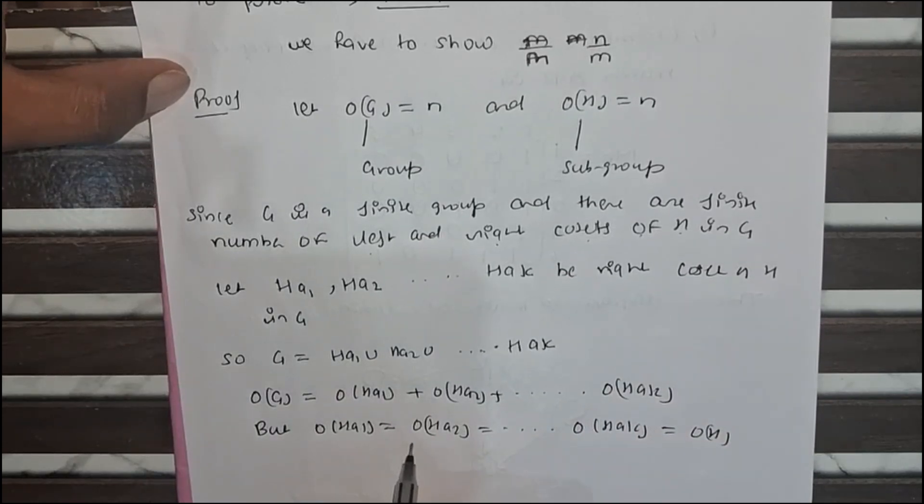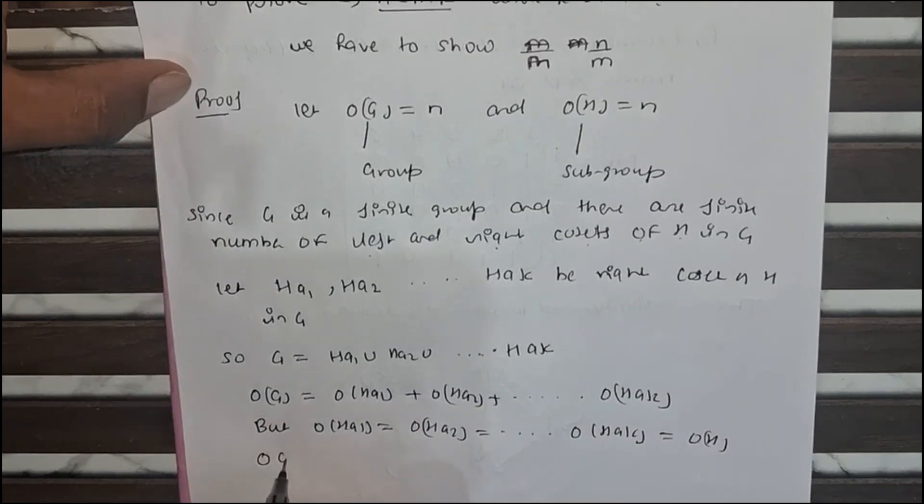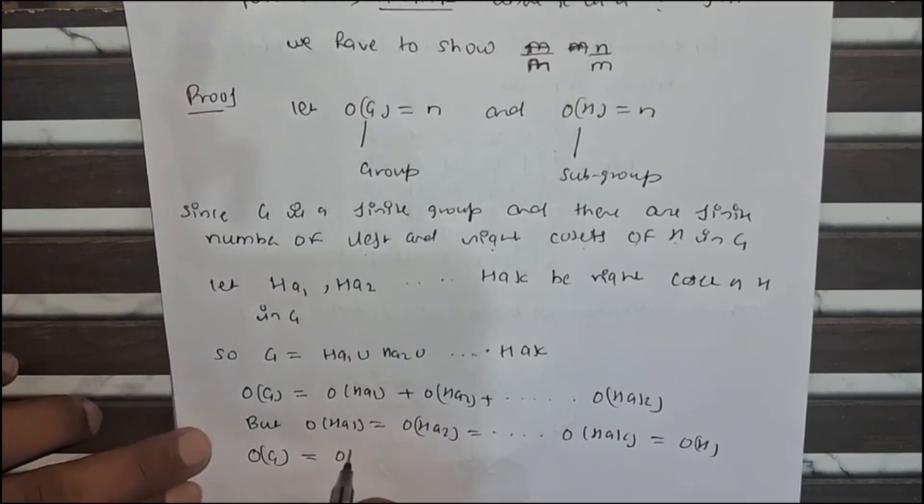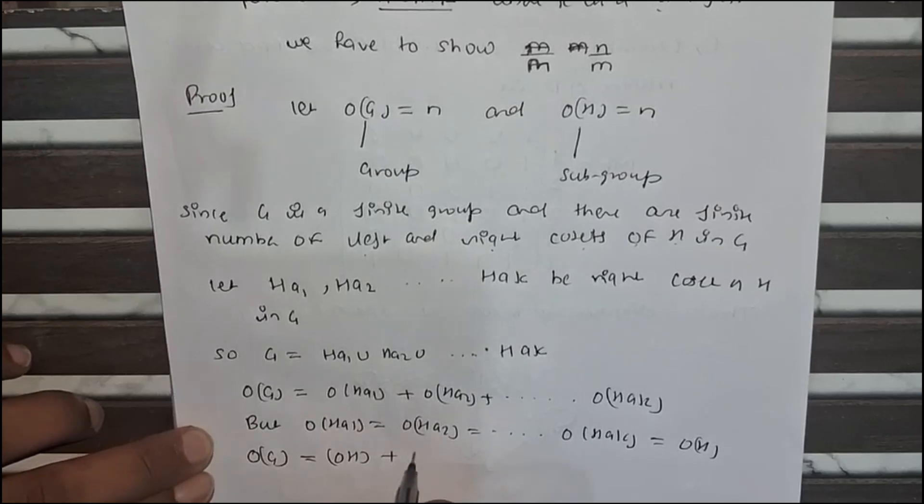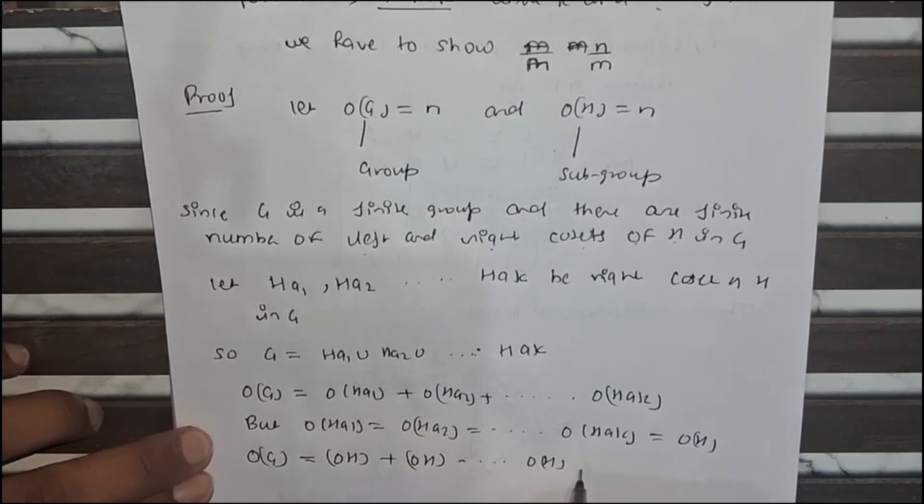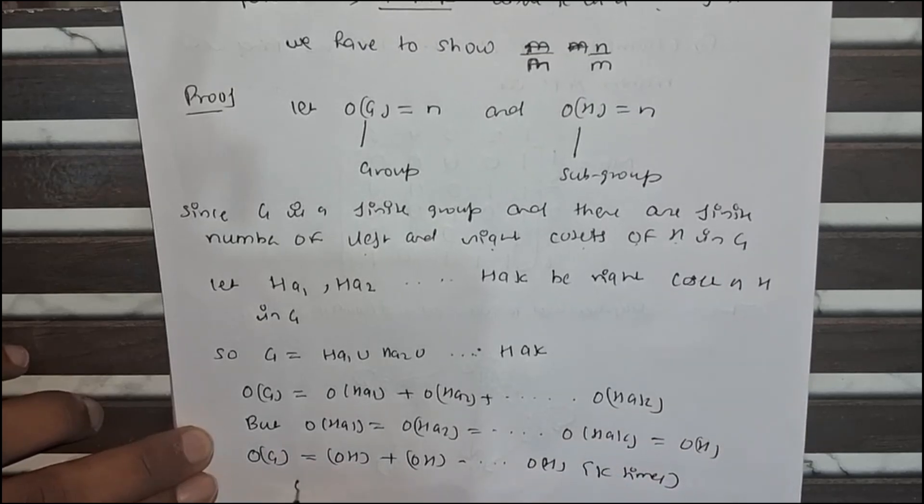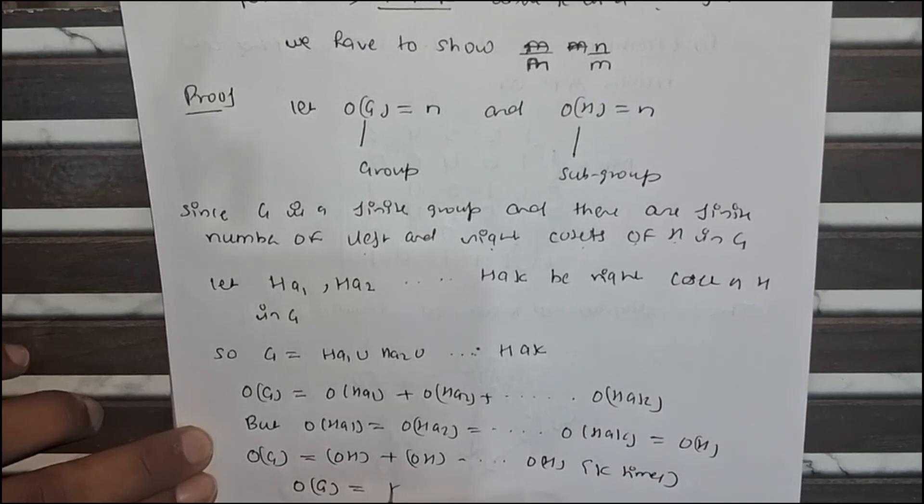Order of g equals order of h a1 equals order of h a2. So order of g equals order of h plus order of h up to order of h k times. As you can clearly see, order of g equals k times order of h.